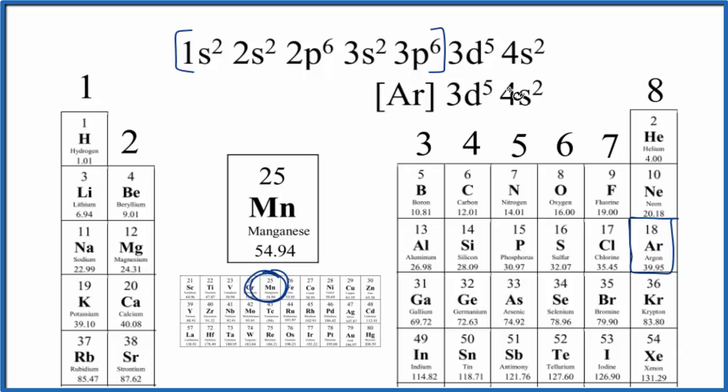Now it doesn't necessarily have to use all of these valence electrons when it forms chemical bonds. Sometimes it loses 2 of these. Sometimes it loses 4. So if it lost 2, that would be Mn2+, the manganese 2 ion. So in that case, we'd write a 0 here instead of 2. And that would be the electron configuration for the Mn2+.